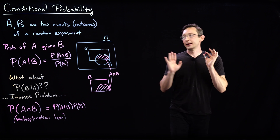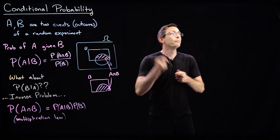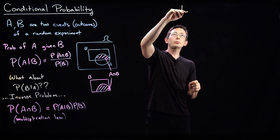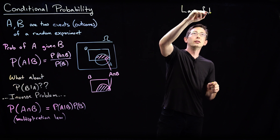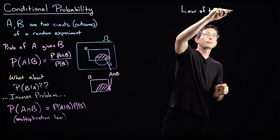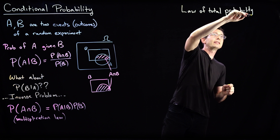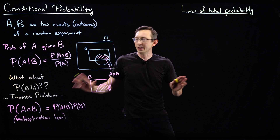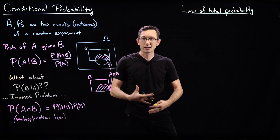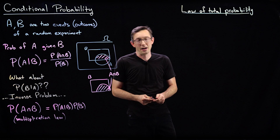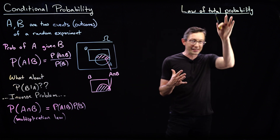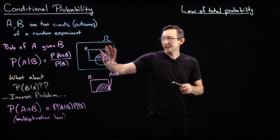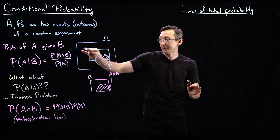The second big corollary is what's known as the law of total probability — again, very, very useful. One interesting thing about probability is that if it's explained simply, it almost seems trivial or obvious, so intuitive it's hard to understand how it cannot be true. What we're going to do is, just like we broke our sample space omega into sets A and B, we'll now break omega into a bunch of disjoint sets.